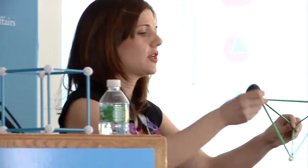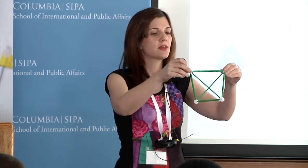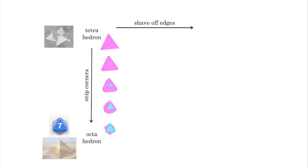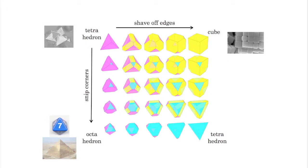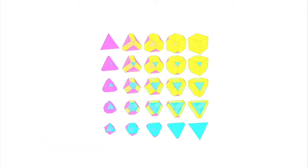Another thing we can do is, the corners that we just snipped off are connected through these edges. What if we start shaving off these edges? If we start shaving off the edges of a tetrahedron, eventually — and you can see perhaps in this image — you will end up with a cube, which sounds crazy, but look at how it happens gradually. We can make a table where we have all the shapes in between, and this is what we used in order to study packing. I'm showing you here only a grid of five by five, but in fact we did more than 15,000 polyhedra on this table in order to really understand packing as a function of shape.